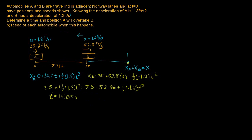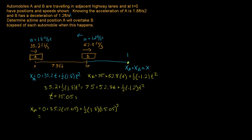At T = 15.05 seconds, car A has reached car B. To find the position, we substitute into the equation for X_A: X_A equals zero plus 35.2 times 15.05 plus one half times 1.8 times 15.05 squared. Solving this gives X_A equal to 733 feet from the starting point of car A.